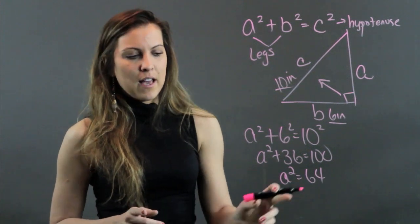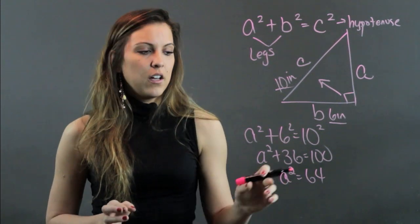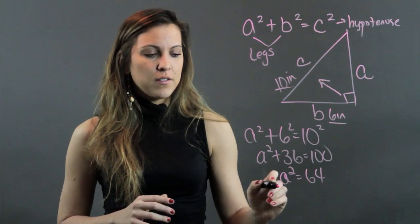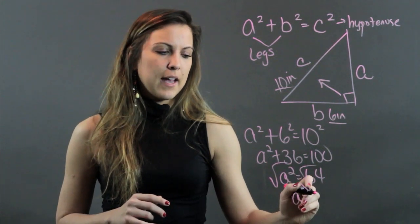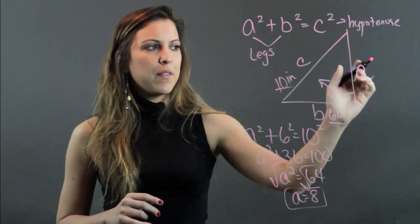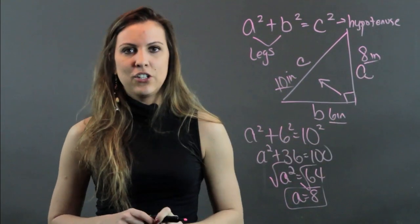But I'm not done because I have A squared and I need just A. So in order to just find A, you have to do the inverse of squaring, which is square rooting. And when I do that, I get A equals 8, and the missing side of my right triangle is 8 inches.